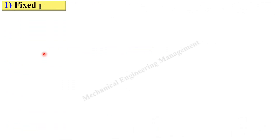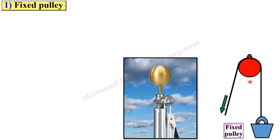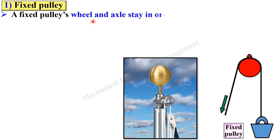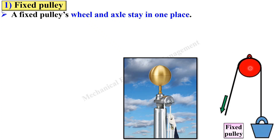Now let us see in detail about the three different types of pulley, starting with the fixed pulley. This is the simple diagram for the fixed pulley and this is the application of the fixed pulley. A fixed pulley's wheel and axle stay in one place. Here you can see this is the fixed pulley's wheel, and perpendicular to this wheel there is an axle. Both the pulley as well as the axle of this pulley stay in one place — that means it is not movable. That is why it is called a fixed pulley.